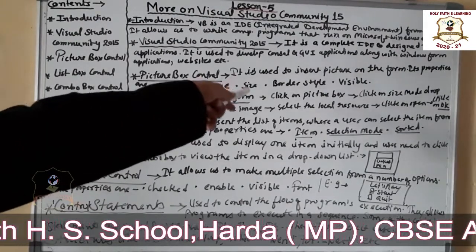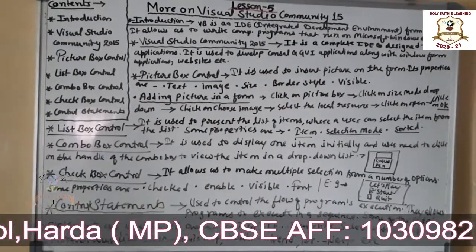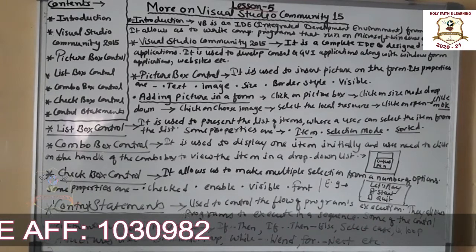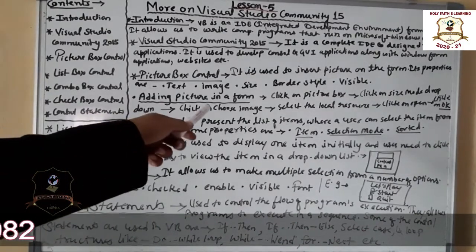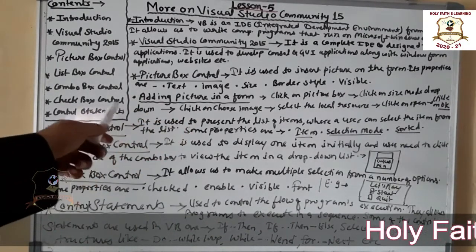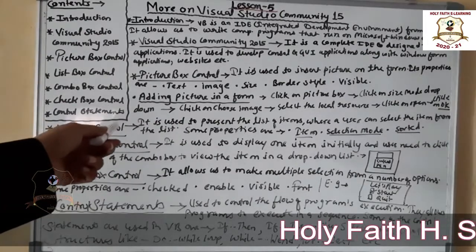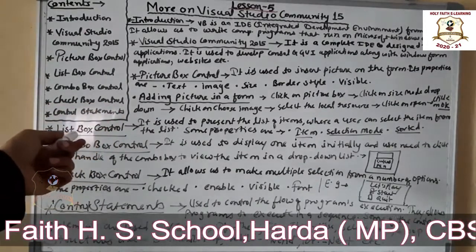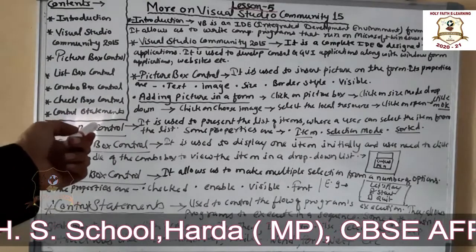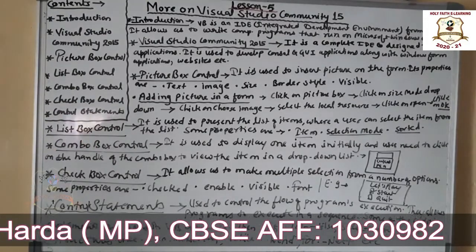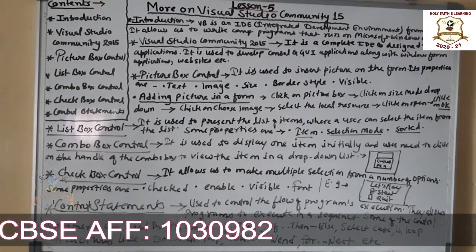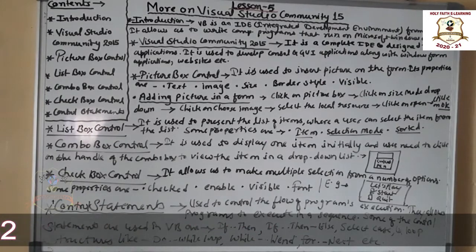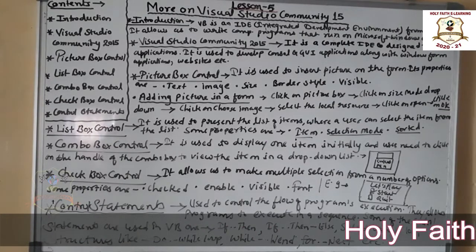The properties of Picture Box control are: Text — used to give the name of the image; Image — the image displayed in the control; Size — allows you to resize the height and width; Border Style — lets you choose from available styles; and Visible — determines whether the control is visible or not.